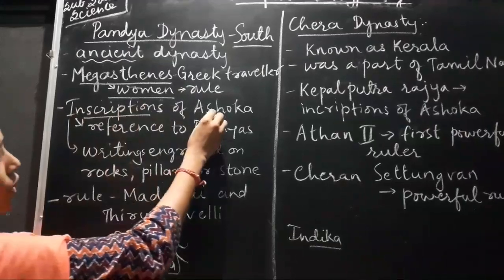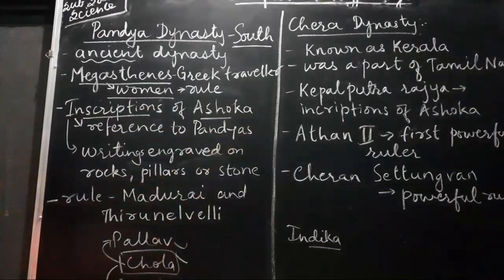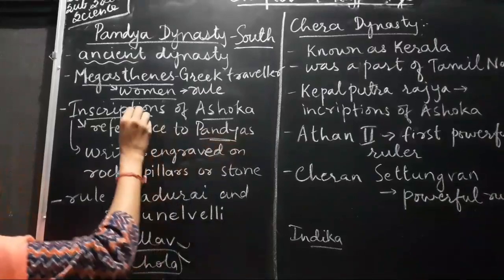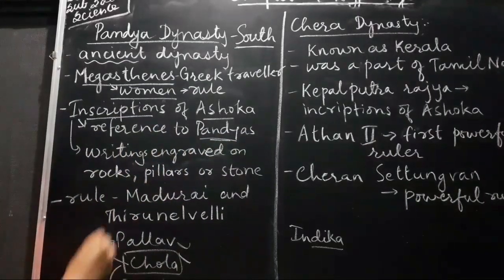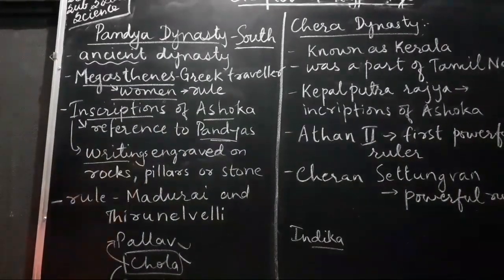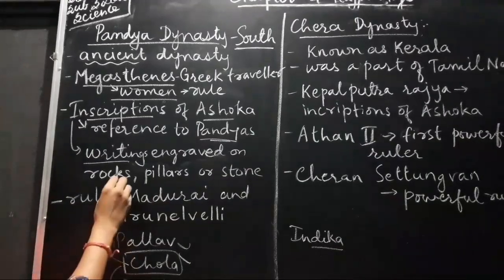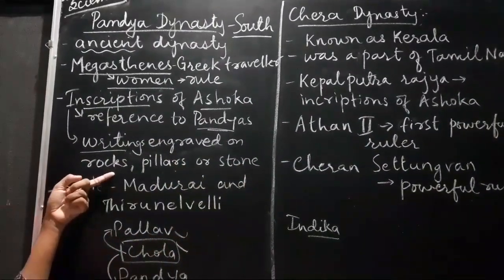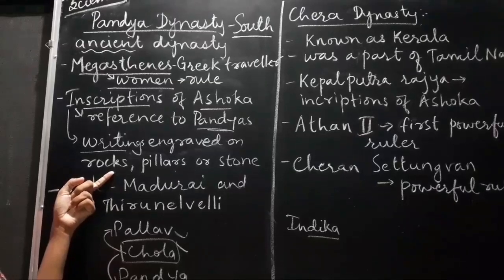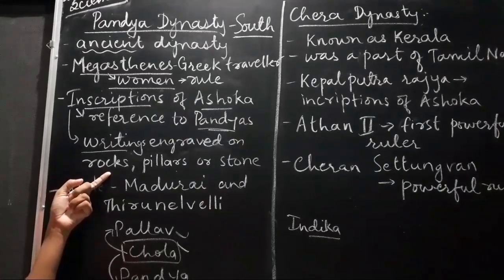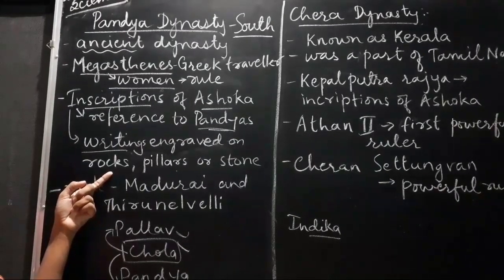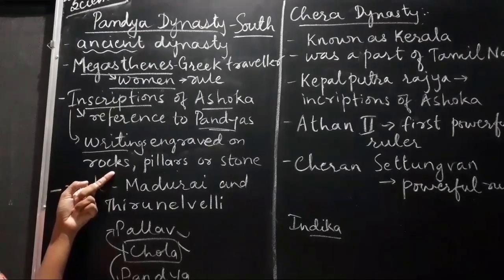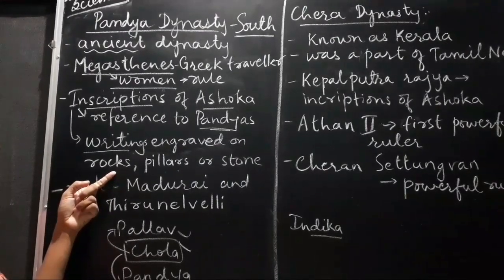The inscriptions of Ashoka have references to the Pandyas. Inscriptions means the writing which are engraved on rocks, pillars or stones. On these things you will find the achievements of the king, what message he wants to give to the people, and how his administration was — some verses and shlokas during his time.